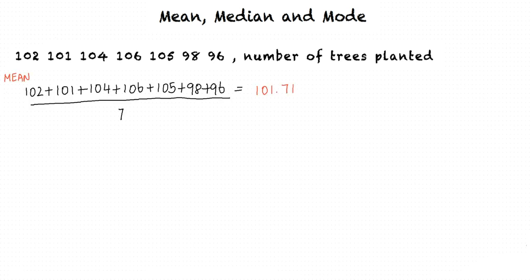In order to calculate the mean, we take the average of the data. The mean is (102 + 101 + 104 + 106 + 105 + 98 + 96) / 7, which equals 101.71.